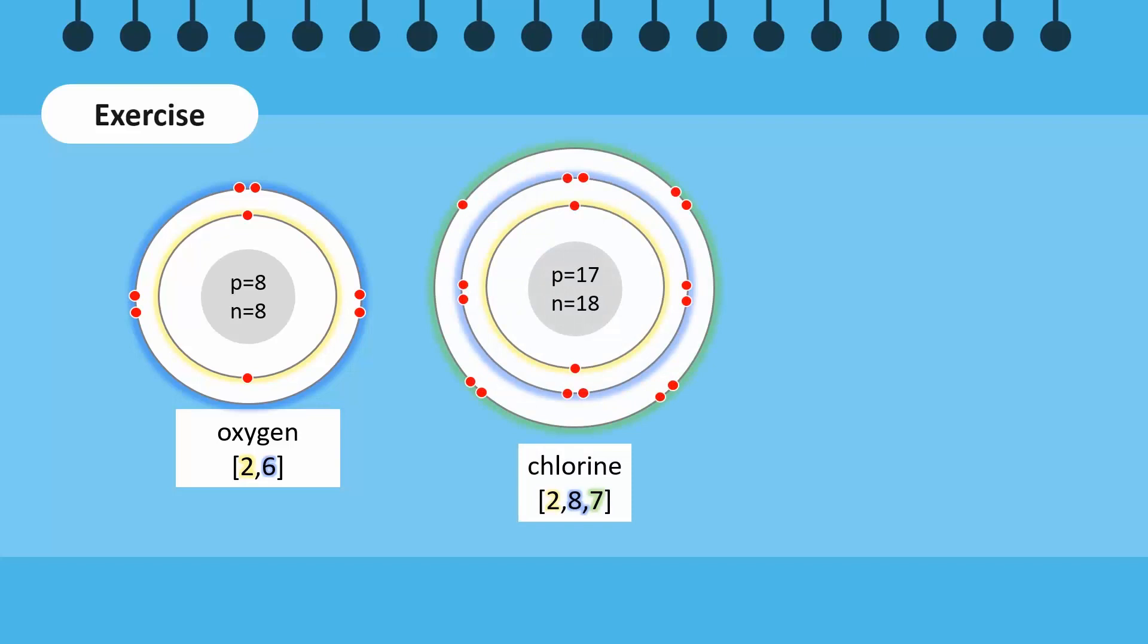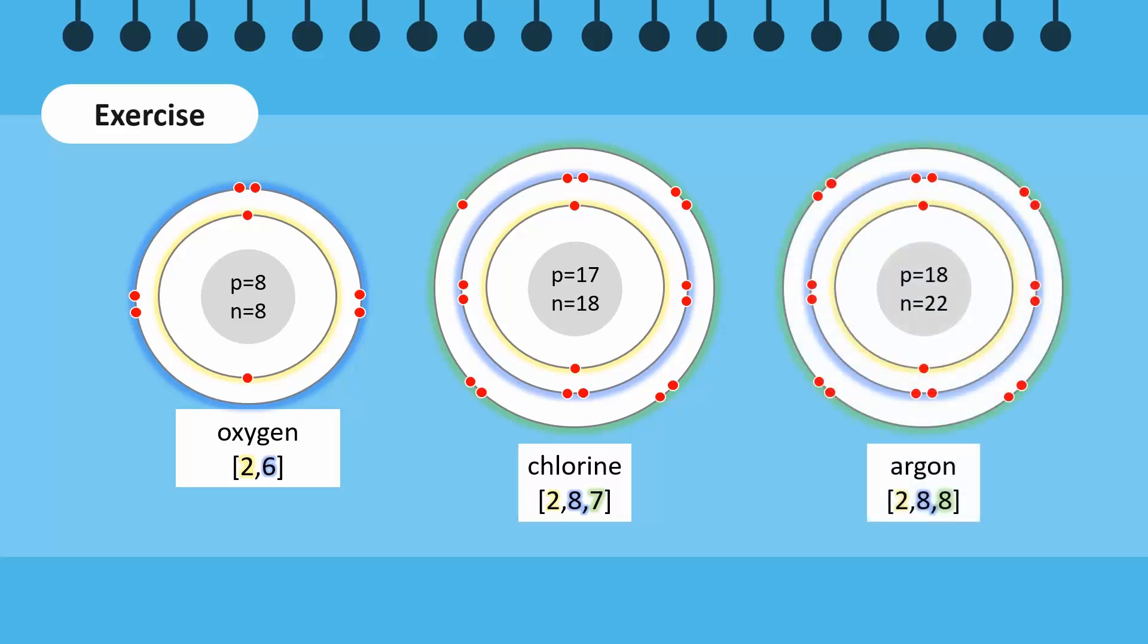Chlorine has total 17 electrons, 2 in the first shell, 8 in the second and the remaining 7 in the third shell. Argon has 18 electrons, 2 in the first shell, 8 in the second and the remaining 8 in the third shell. How many correct structures did you make?